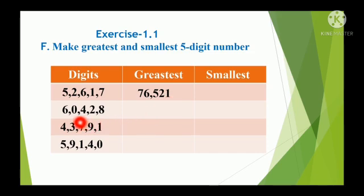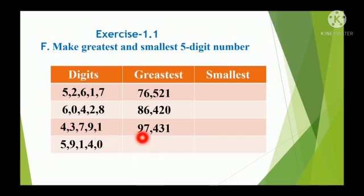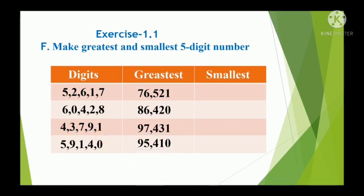For the second set of digits 8, 6, 4, 2, 0: arrange from big to small — the greatest number is 86,420. For digits 9, 7, 4, 3, 1: arrange from big to small — the greatest number is 97,431. For digits 9, 5, 4, 1, 0: arrange from big to small — the greatest number is 95,410.